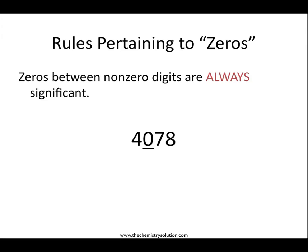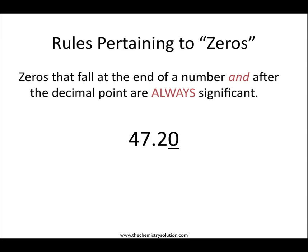The first is that any zeros between non-zero digits are always significant. Also, zeros that fall at the end of a number and after the decimal point are always significant.